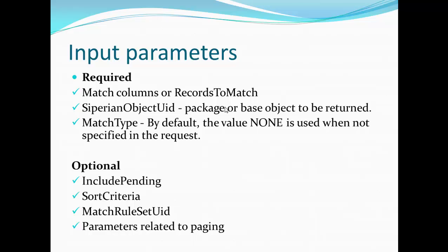Optional parameters include: include pending — if your response should include records in the pending state, set this parameter; sort criteria — what criteria to use for sorting; match rule set UID — if you are using a match rule set instead of match columns, the behavior will differ; and parameters related to paging, if you want to use pagination. These are the required and optional parameters for the Search Match API.